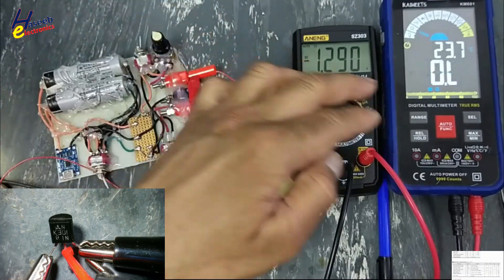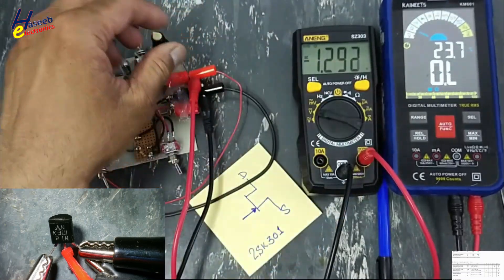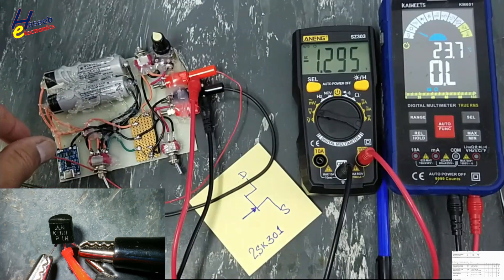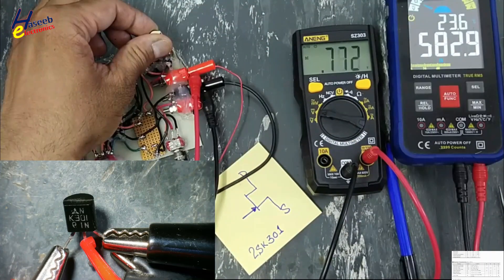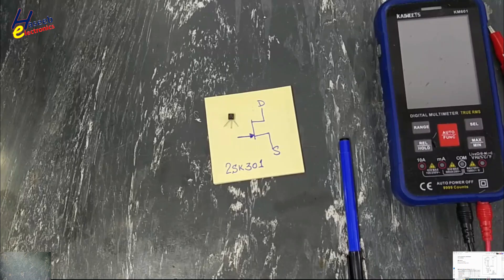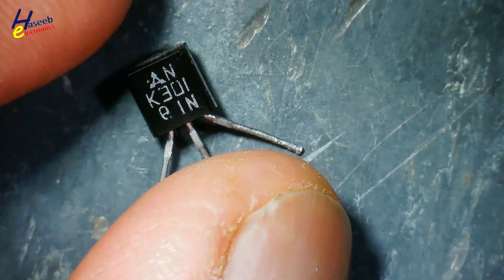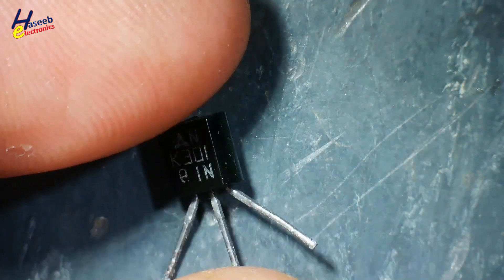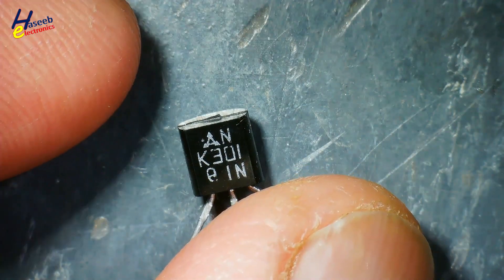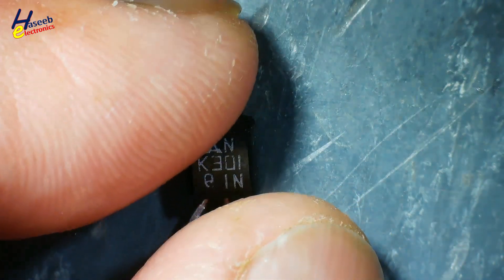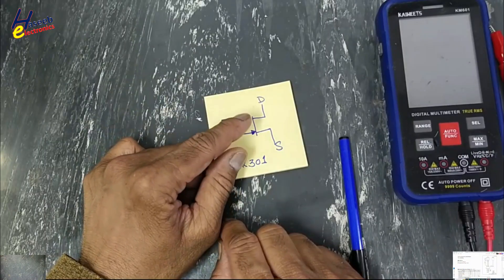Assalamualaikum warahmatullahi wabarakatuhu, friends, welcome back to my channel. In this session we are testing the K301 N-channel JFET — junction field effect transistor. The complete part number is 2SK301 field effect transistor.